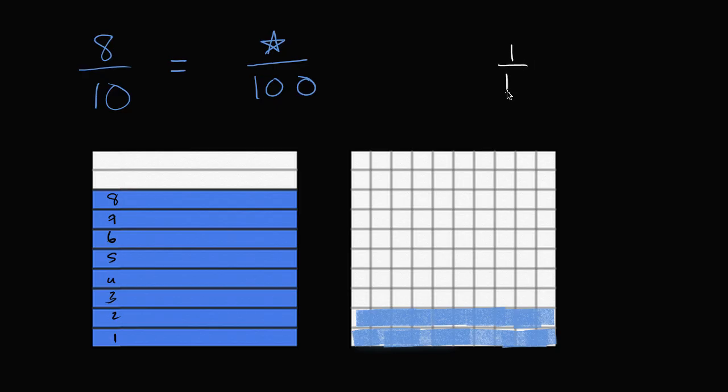So we see here that one tenth is equal to ten over one hundred. Every time I fill in a tenth, that's one tenth right over there. If you look at this diagram, that's equivalent to ten hundredths. It's equivalent to ten of those hundred equal sections.